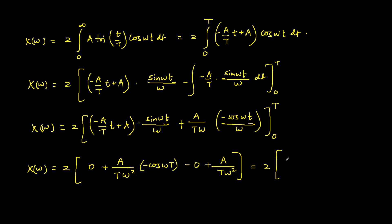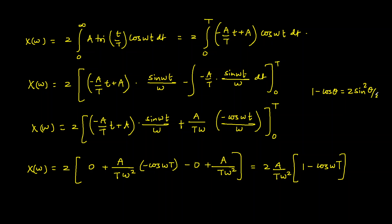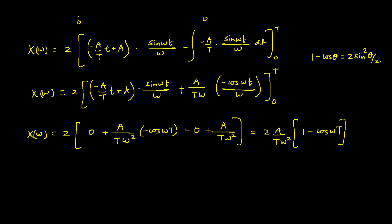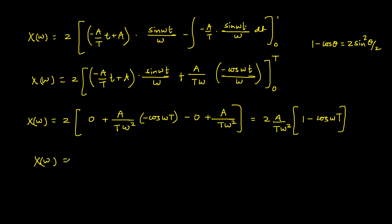Using the identity 1 − cos(θ) = 2sin²(θ/2), we replace 1 − cos(ωT) with 2sin²(ωT/2). Therefore, x(ω) = 2·(A/(Tω²))·2sin²(ωT/2) = (4A/(Tω²))·sin²(ωT/2).